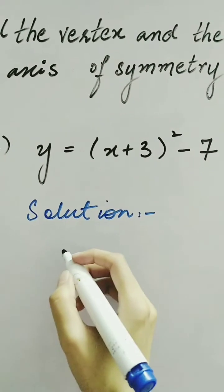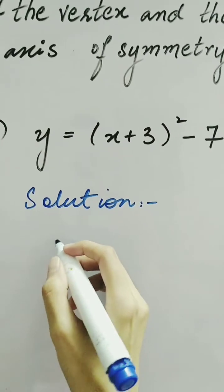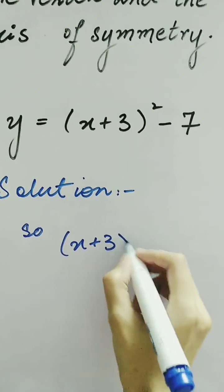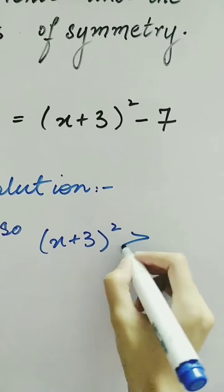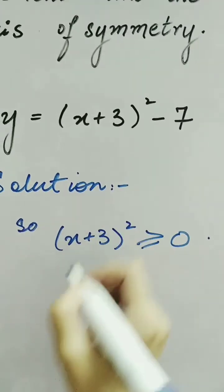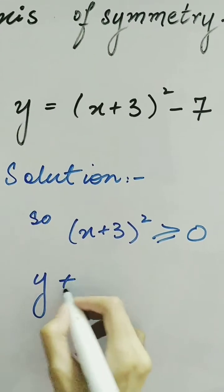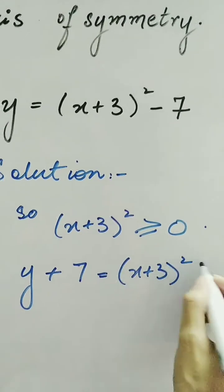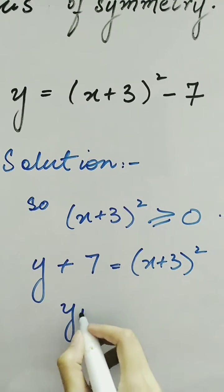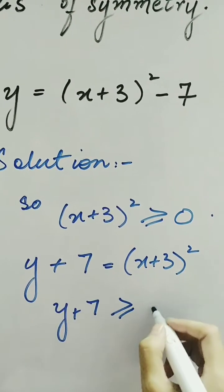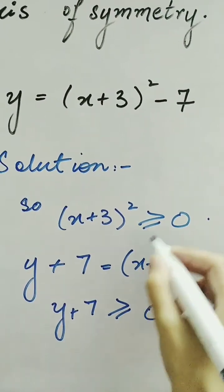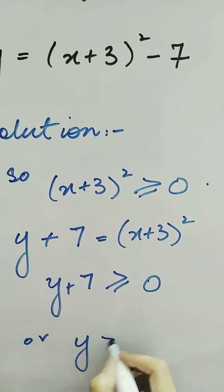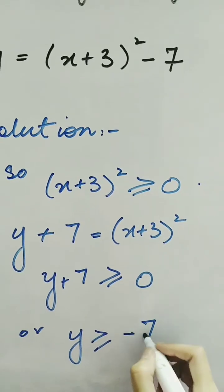As we know that this expression is in complete square form, so (x + 3)² ≥ 0. If we write this expression in the form y + 7 = (x + 3)², we can say that y + 7 ≥ 0, or y ≥ -7.